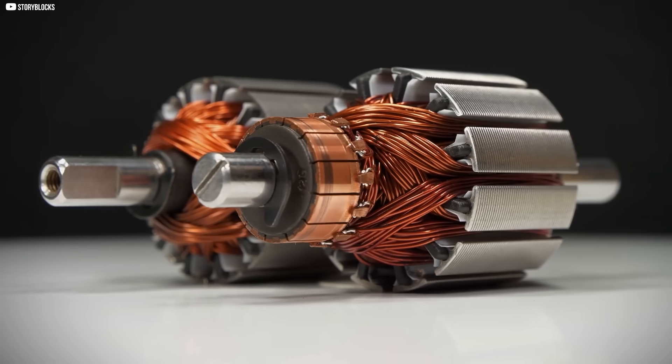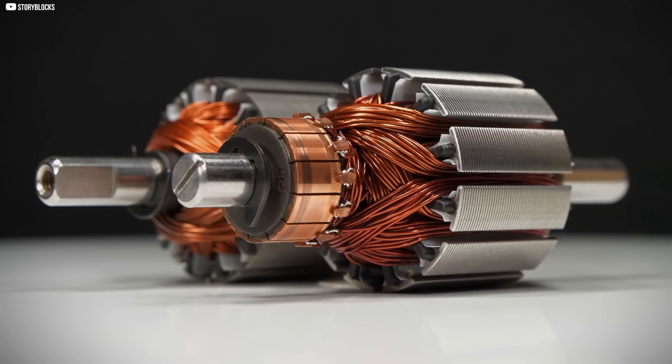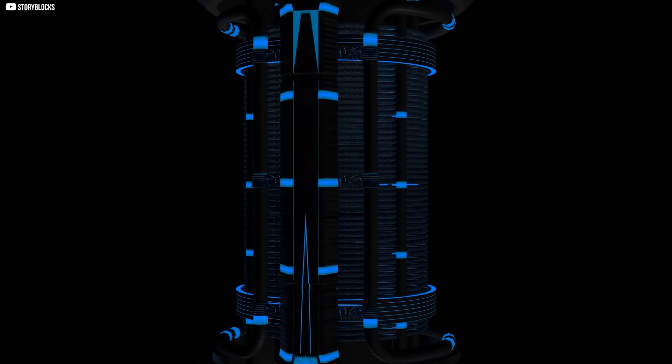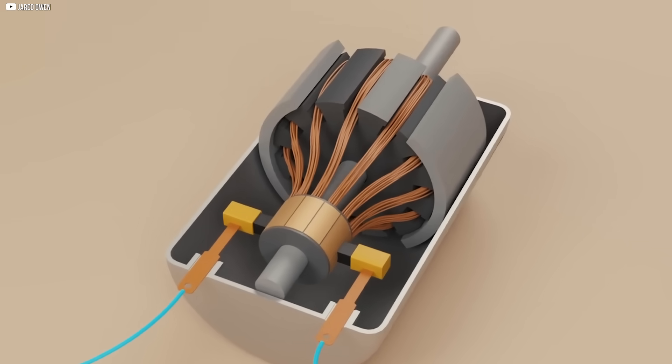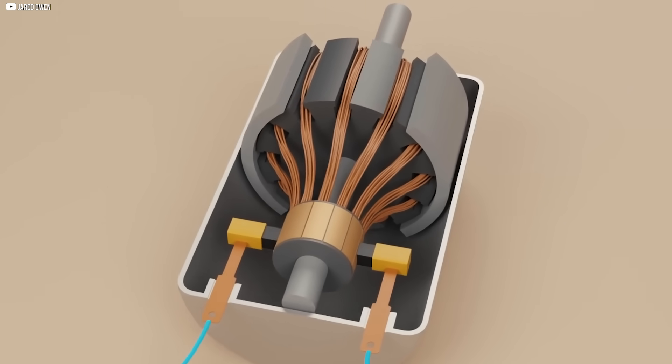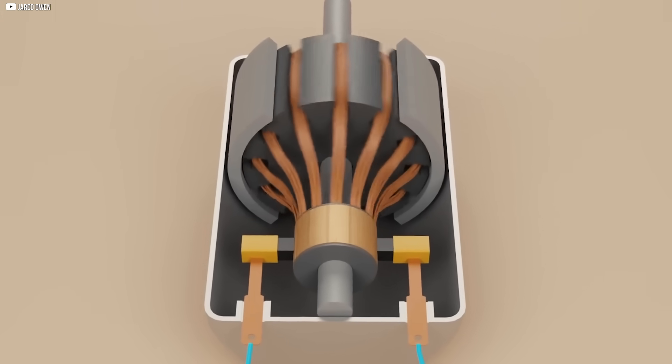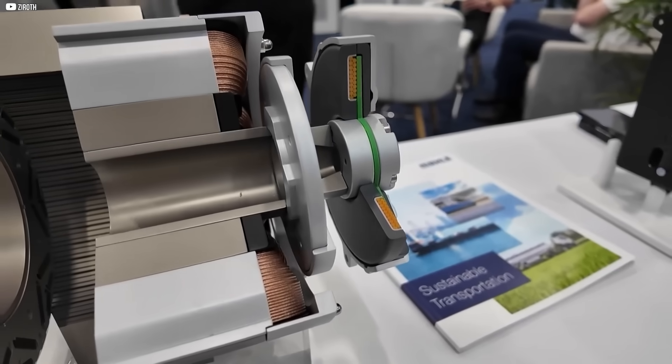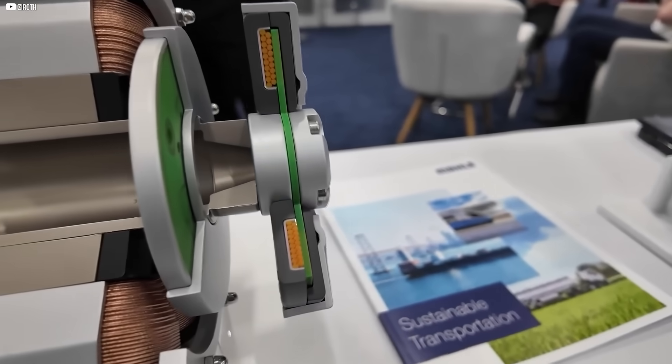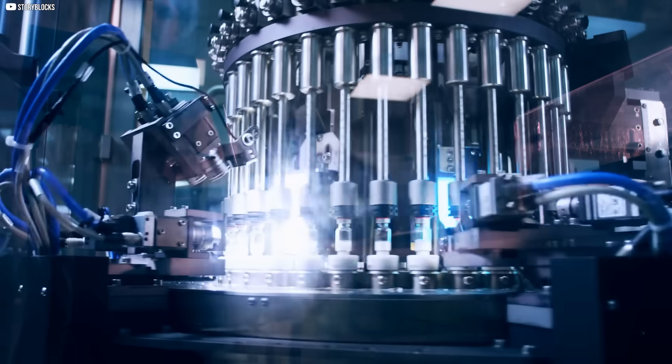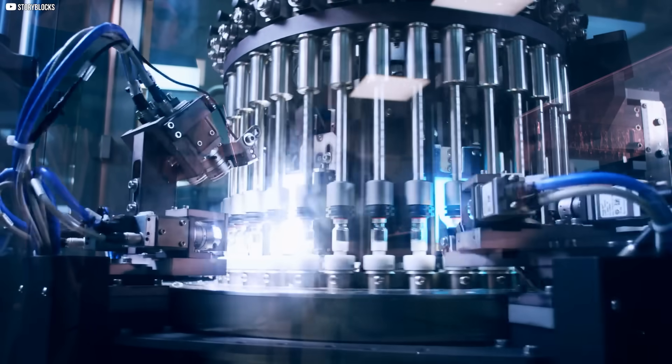Then there's flexibility. Traditional motors are rigid and bulky. The carbon-based coils change that. These new motors can bend, twist, and even compress without losing performance. Imagine electric motors woven into fabrics or embedded in soft robotics. Machines that can move like muscles rather than machines.